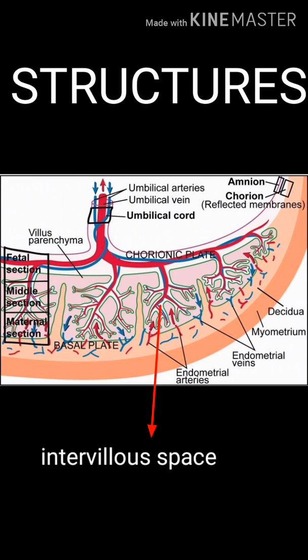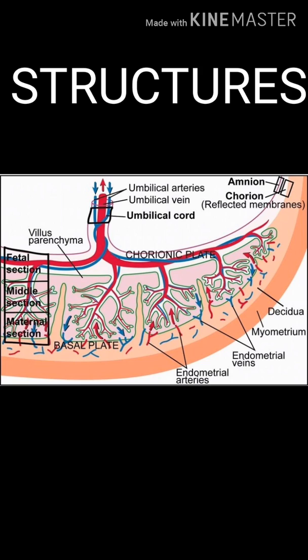Between these two plates we can see the intervillous space. In this intervillous space, there are stem villi and branches of umbilical vessels.